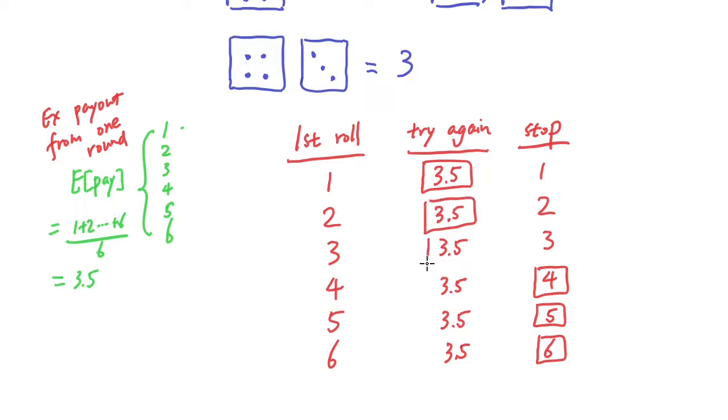So at two, you want to try again to get the 3.5. So what that means is that when you got either a one, two, and three, you're going to choose a 3.5. And when you get the four, five, six, you're going to choose the four, five, and six.